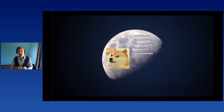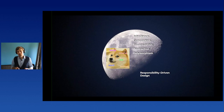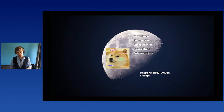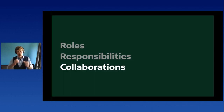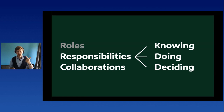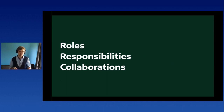Responsibility-Driven Design is not new — it's a 20-year-old concept described in a number of books. RDD focuses on three aspects of modeling objects: first, collaborations — how objects talk to each other, which objects see each other; second, responsibilities of individual objects — what an object knows, what it does, and what it decides about; and third, roles — which are basically sets of responsibilities.